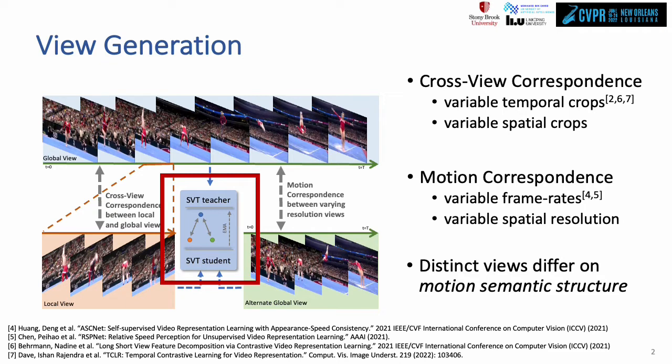Consider this example, where a limited spatial crop capturing only a part of the gymnast, or a temporal crop with only a part of the jump can still be identified as the same action, or at a different frame rate, the action is still recognizable.